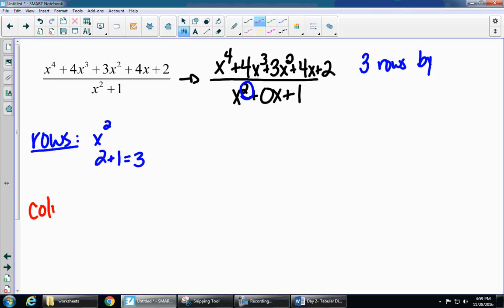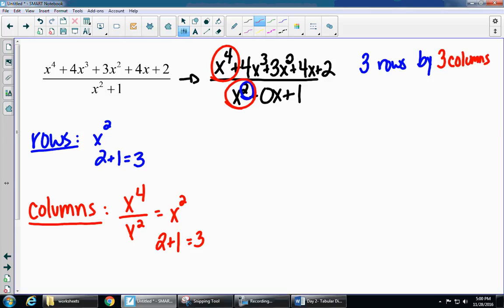Now I need to determine the number of columns. So for columns, I'm going to look at both the numerator and the denominator. I have an x to the fourth, and I have an x squared. So if I have x to the fourth divided by x squared, I get an x squared. So I need one more than that, so I need 3 columns. So I'm going to have 3 rows by 3 columns.